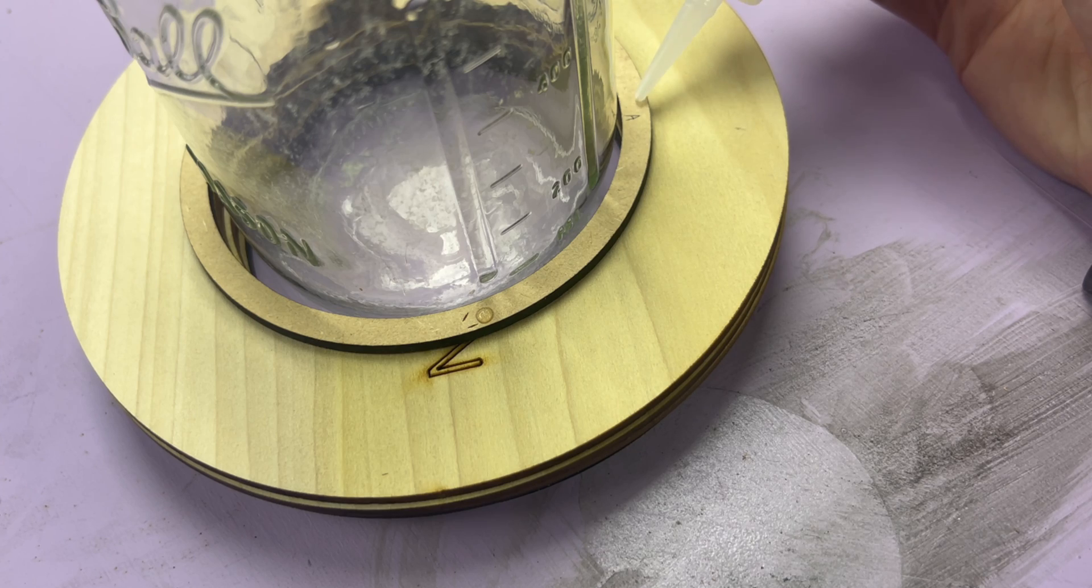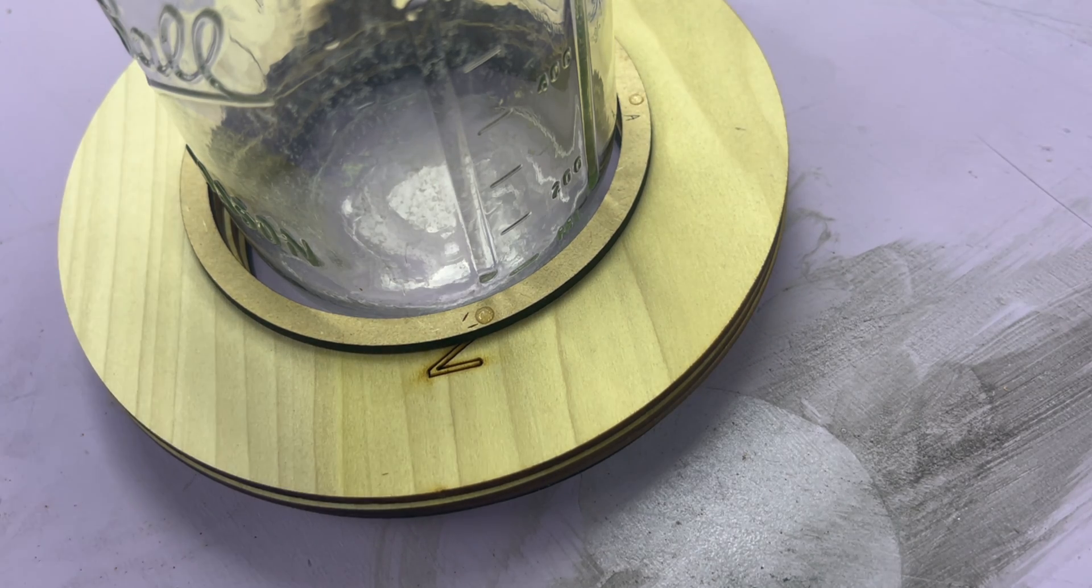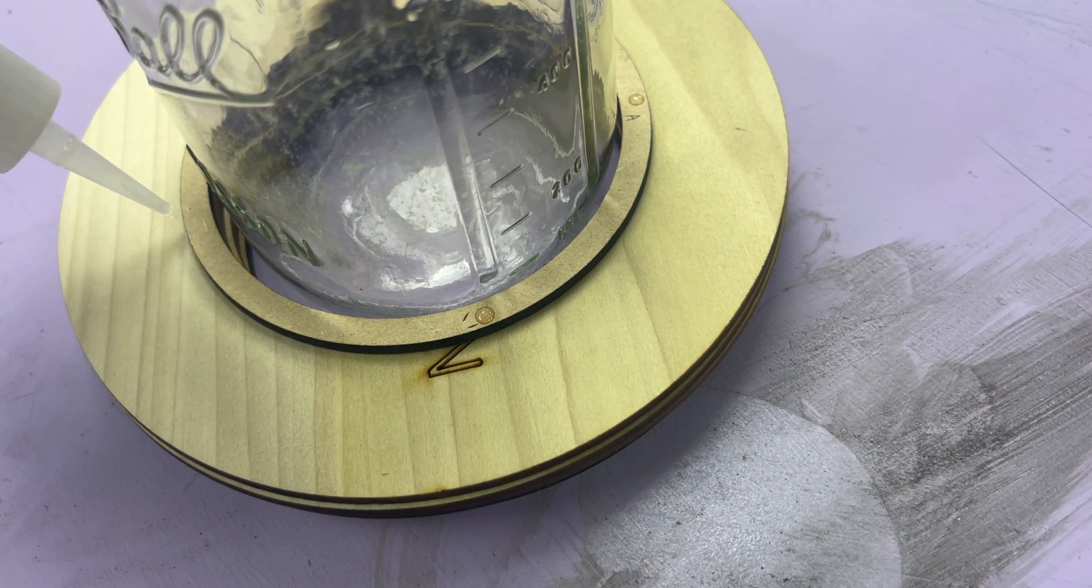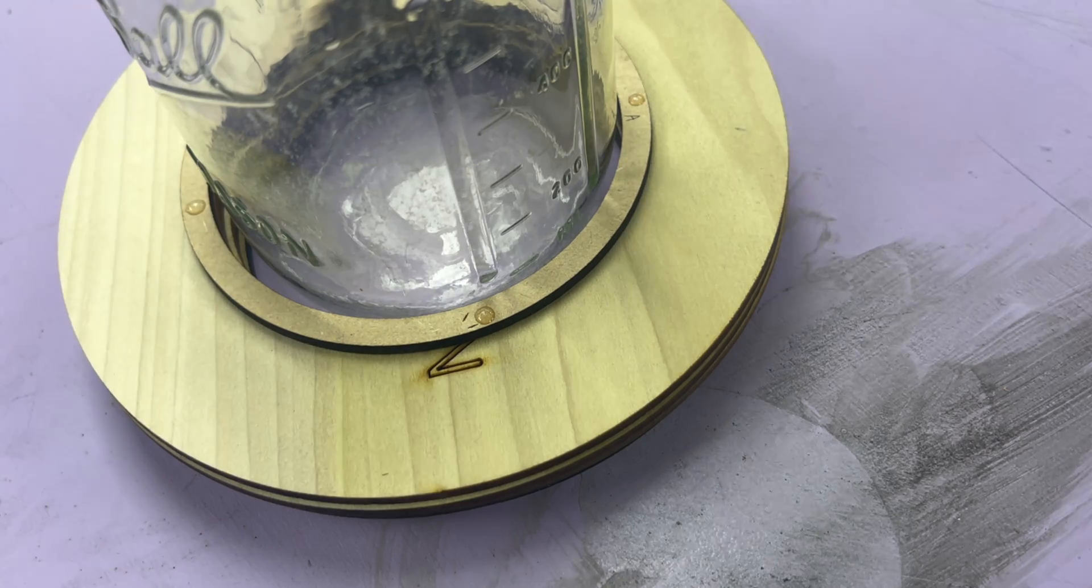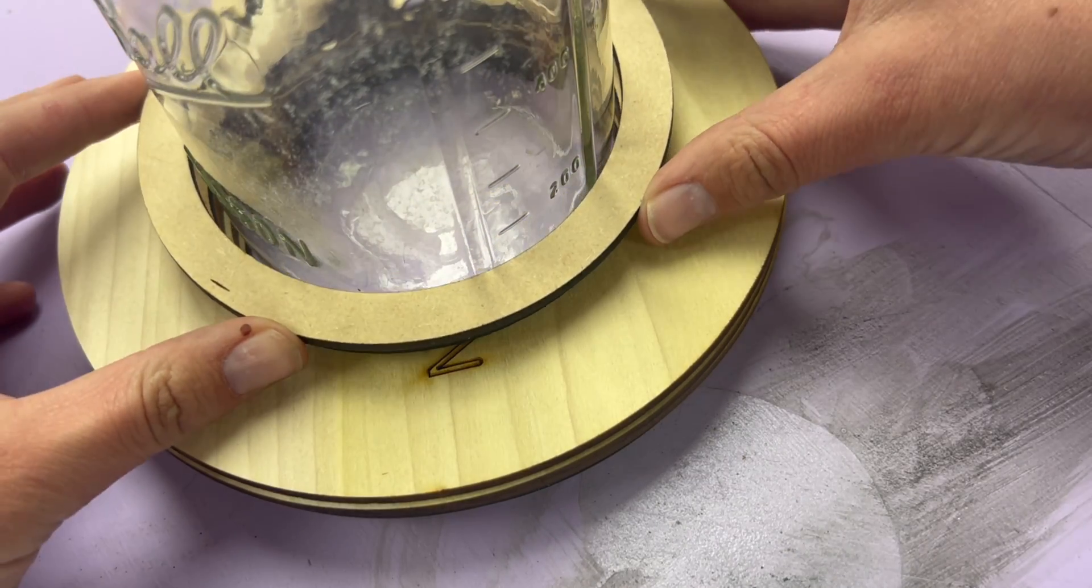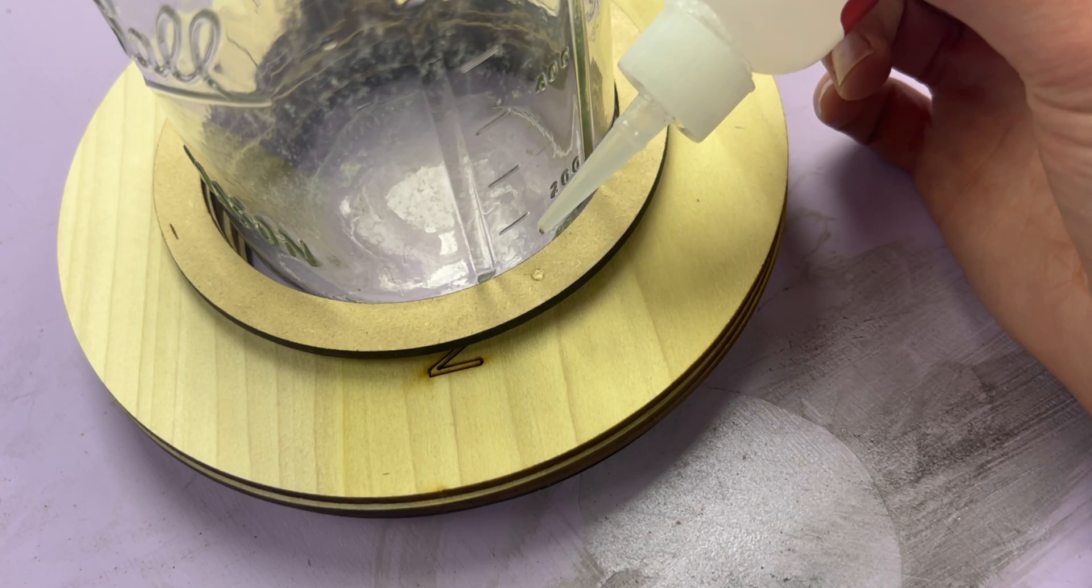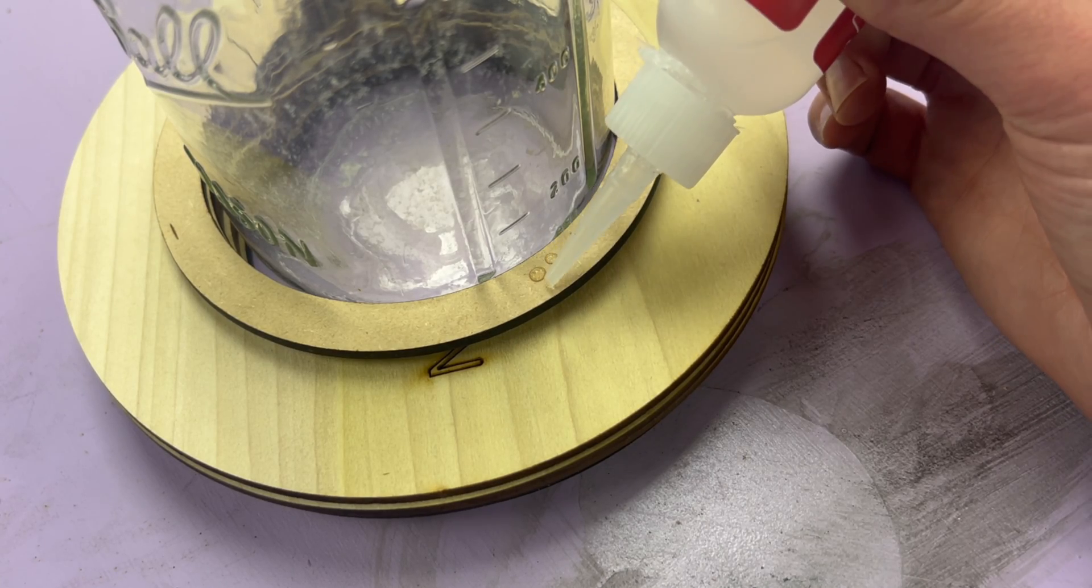To start building this, I stacked it on top of other pieces, and then I'm going in with Starbond thick CA glue. This is going to give a snug fit and also dry really quickly, so this won't have a chance to shift around on me as I get stacking.